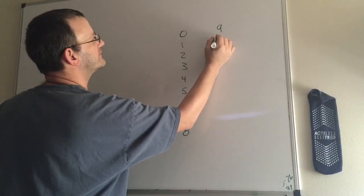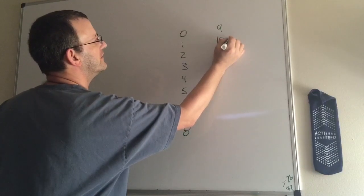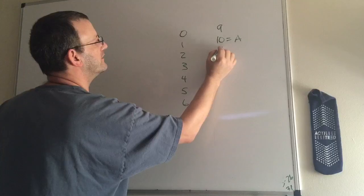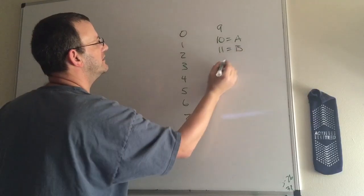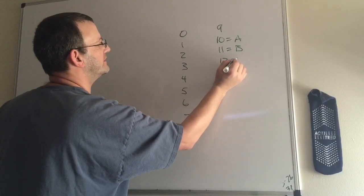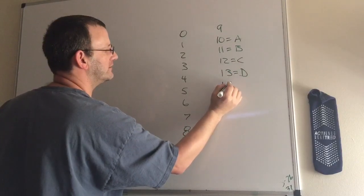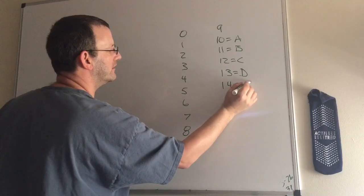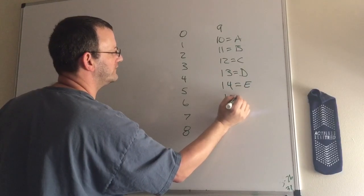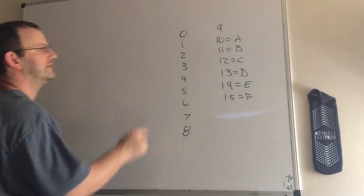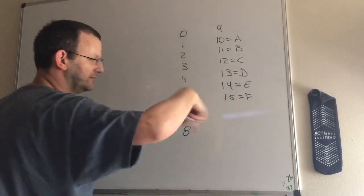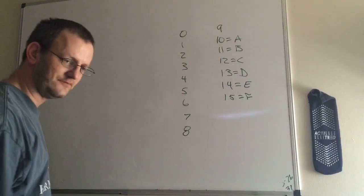So now let's get to the next six numbers. Ten is going to be A. Eleven is going to be B. Twelve is going to be C. Thirteen is going to be D. Fourteen is going to be E. And fifteen is going to be F. When you include the zero, there are sixteen total numbers here. That's where you get the base sixteen from as well.